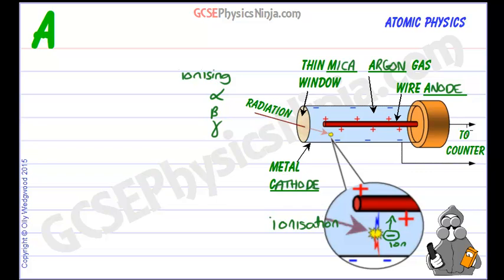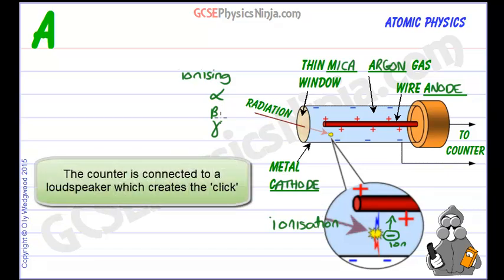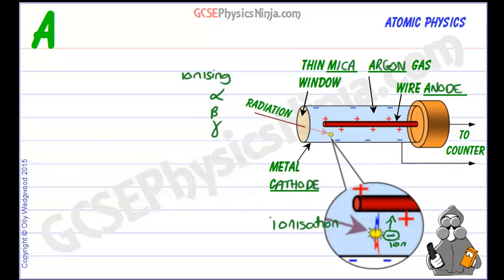So each time the Geiger-Müller tube clicks that's an alpha, beta or gamma radiation event happening, coming through the window causing an ionization.